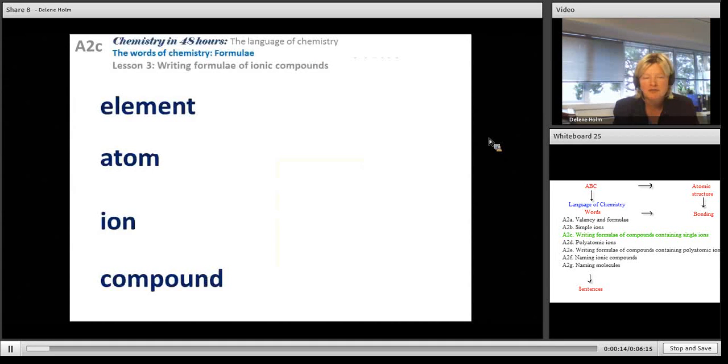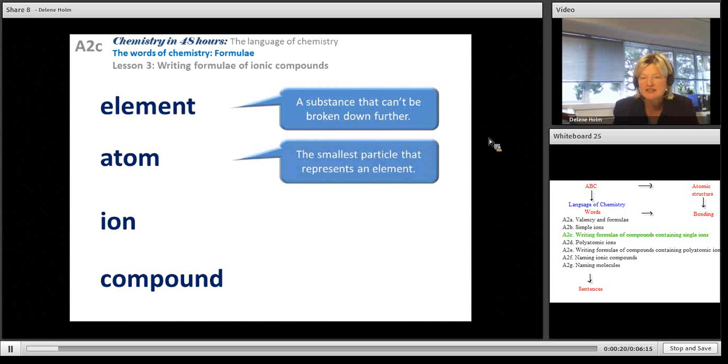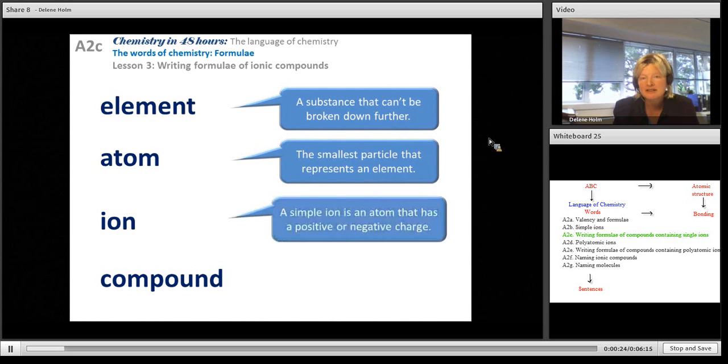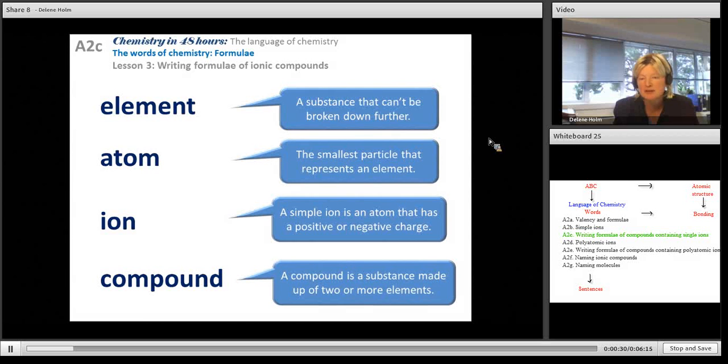Let's revise terms. What is an element? It's a substance that can't be broken down further. An atom is the smallest particle that represents an element. An ion is an atom that's positively or negatively charged. And a compound is a substance made up of two or more elements, either in terms of atoms or ions.